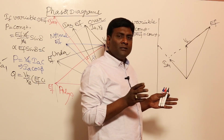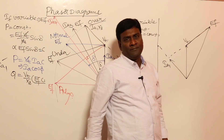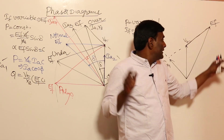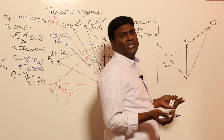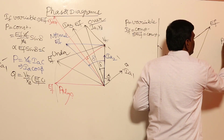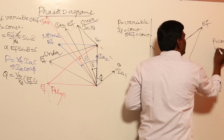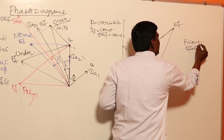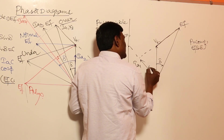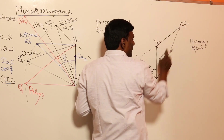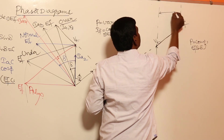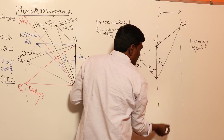In a motor, EF should lag behind Vt; in a generator, EF should lead. For the motor with P constant, EF sin delta must be constant. The angle between Vt and EF is delta; the angle between Vt and Ia is φ. So EF sin delta should remain constant when power is constant.